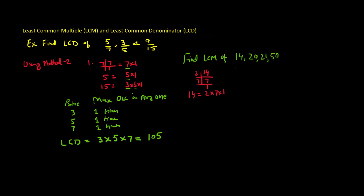Then the prime factors of 20: the minimum number divisible by 20 is 2, then again 2 giving 5, and then 5 giving 1. So the prime factors of 20 are 2 × 2 × 5.